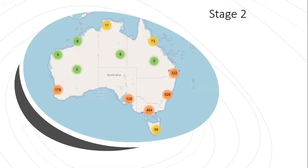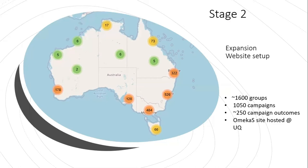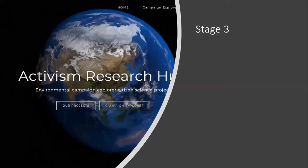That moved us into stage two, which involved expansion of the dataset and setting up a website. The expansion occurred when another group asked me to compile a database of all environmental groups that people could volunteer for, meaning I also included groups which don't fit the ACNC definition of advocacy — lots of bush care groups, catchment groups and wildlife rescue groups. I also started adding more campaigns from another project I was working on, and through a digital fellowship I met someone who told me I could get a site hosted at UQ. Stage three involved another big change: primarily moving the site from an Amica S site at UQ onto WordPress, and this stage is very much still underway.